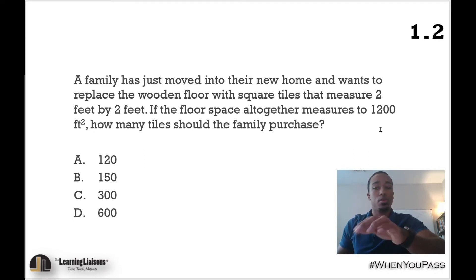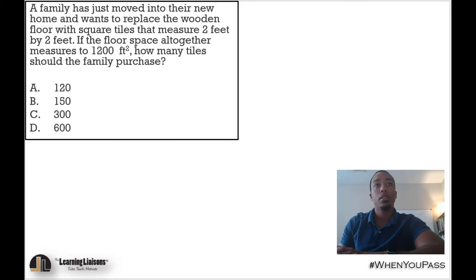The first thing that we want to watch out for is this—this is a common mistake I see: oh, take 1200 and divide it by 2, and then we get 600. Now that's incorrect.